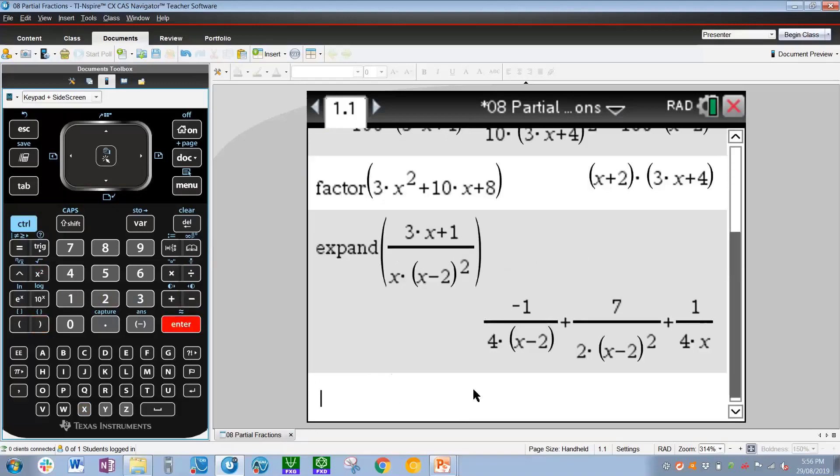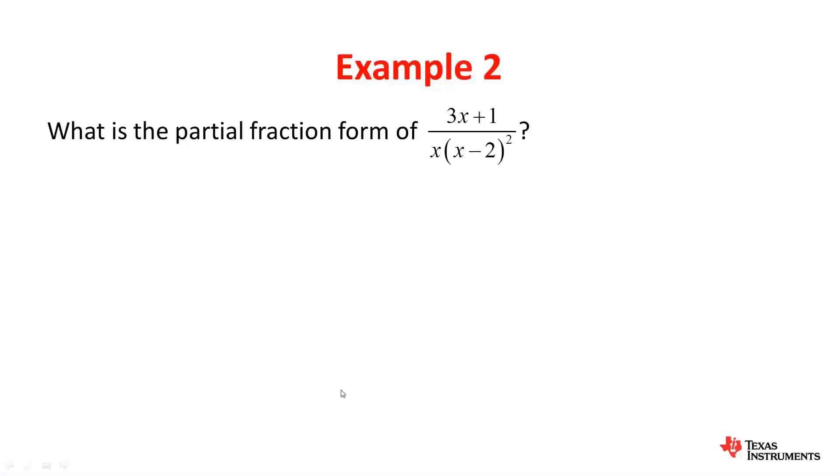Press enter, and we can see that the partial fraction form of this has the form 1 over 4x, and then we have two fractions with x minus 2 and x minus 2 squared respectively in the denominators. Again, a really good multiple choice question, which is what this will be—one of the options that you will see.